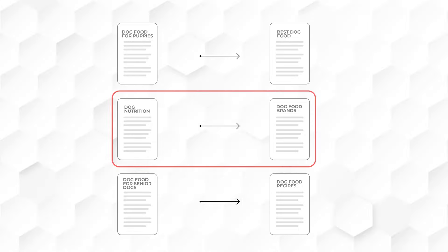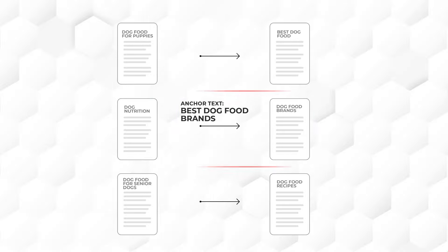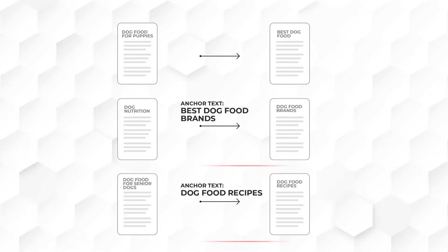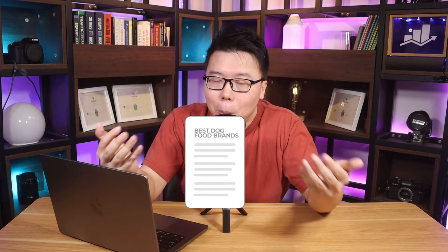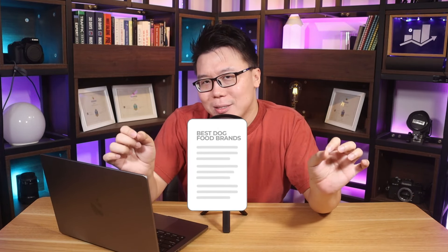For example, when linking to a page about best dog food brands, using 'best dog food brands' as the anchor text will make it clear that this page is important for that topic. Similarly, using 'dog food recipes' when talking about that page helps search engines identify its relevance. While it is good to have descriptive anchor text for each page, you should not over-optimize or overuse the same anchor text — you should have a variety. If you have used 'best dog food brands' as anchor text to link to a page, the next time you want to link to the same page, use a different anchor text such as 'leading dog food brands,' 'popular dog food brands,' or 'best selling dog food brands.'